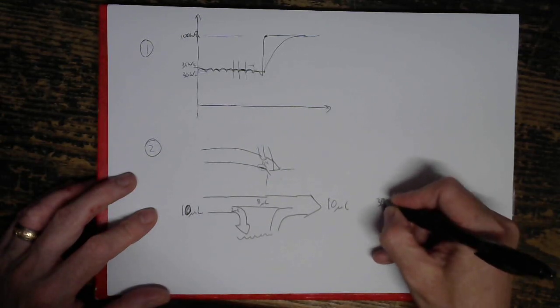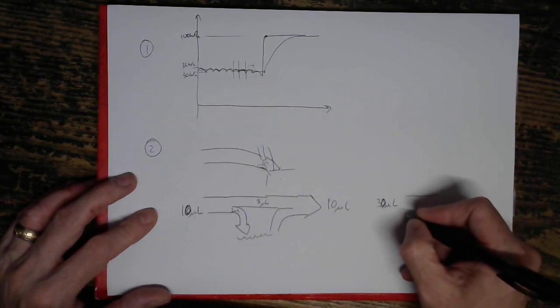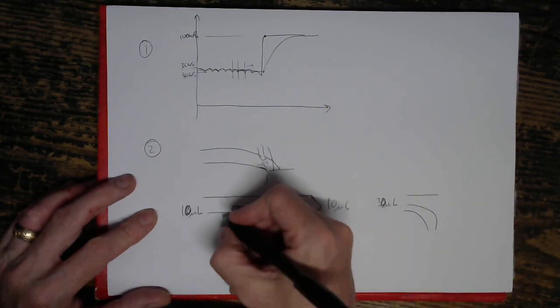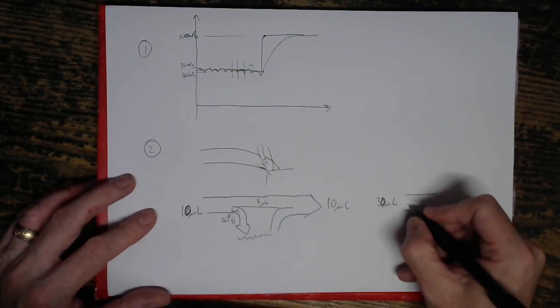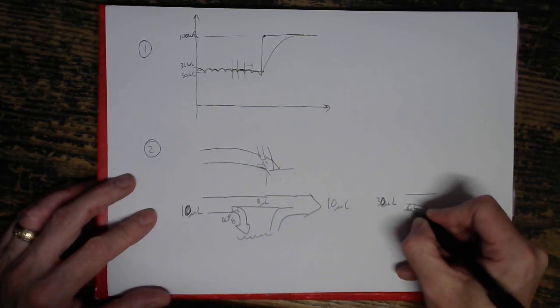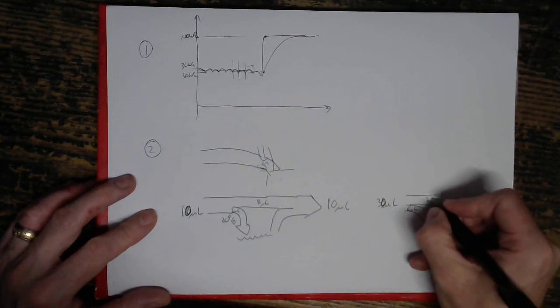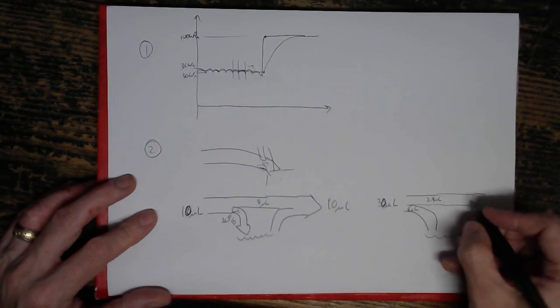If you just deliver 30 microlitres here, then you're still going to have 20% of that going into the puddle. So 20%, 30 microlitres is 6 microlitres. And then you've got 24 microlitres which will go directly into the engine.